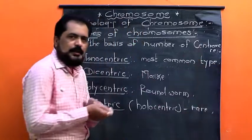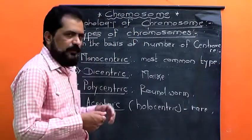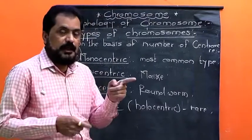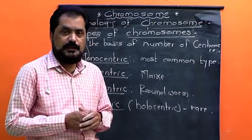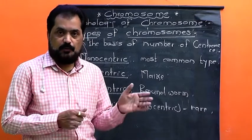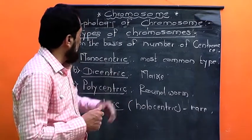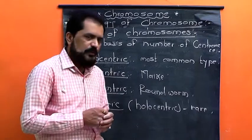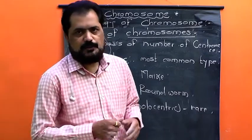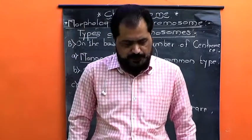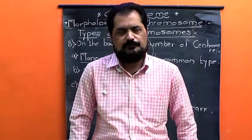Here we have completed the discussion on the structure of chromosome. Before that, we studied the chromosomal theory of inheritance, then about the chromosome itself, the morphology of chromosome, and finally the classification of chromosomes. That's all for today. Take great care of yourself. Thank you and bye.